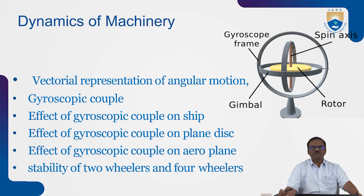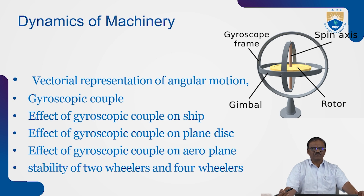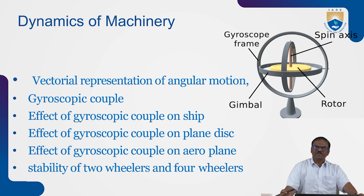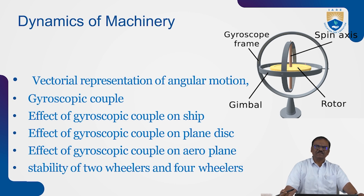In this course we will try to understand the vectorial representation of angular motion, gyroscopic couple and its effect on ships, plane discs, aeroplanes, and the stability of two-wheelers and four-wheelers. Whenever we are negotiating a curve in day-to-day life with a four-wheeler or two-wheeler, we reduce speed. Otherwise, it is going to produce a gyroscopic torque on the vehicle and the vehicle will overturn.